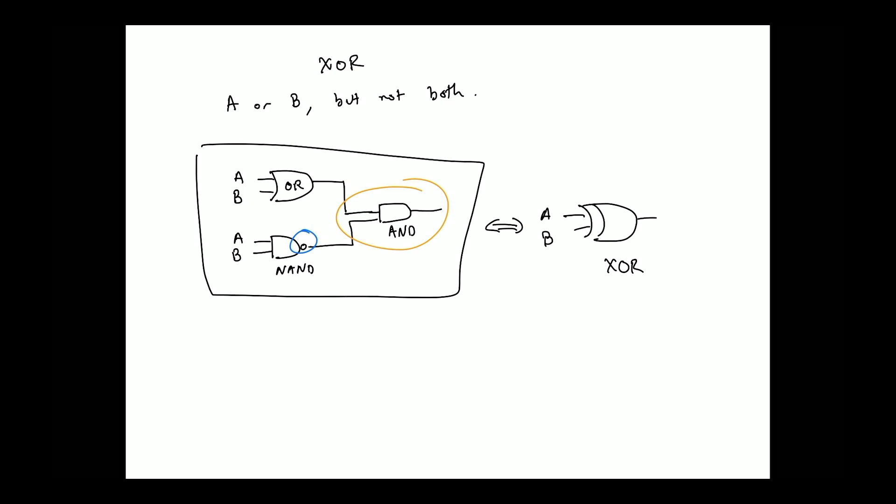You see how we're using the output from one gate as the input for another? So NAND is true if one or the other is true, but not both being true. AND is true only when both are true. So NAND is the opposite of that.